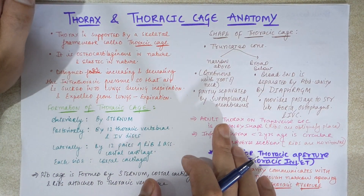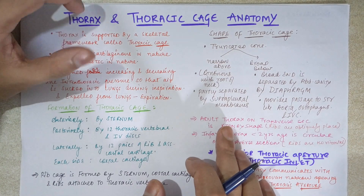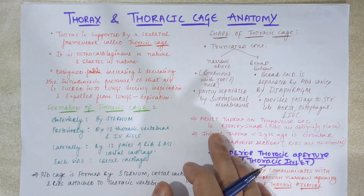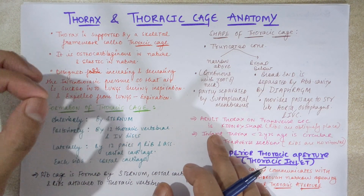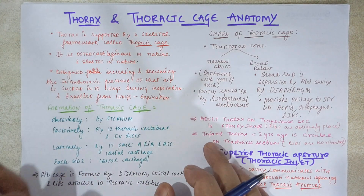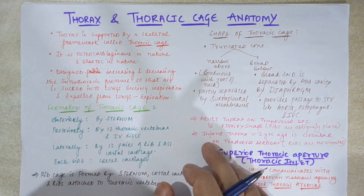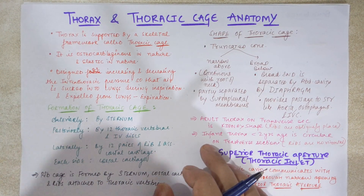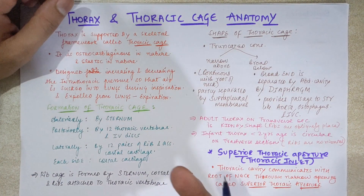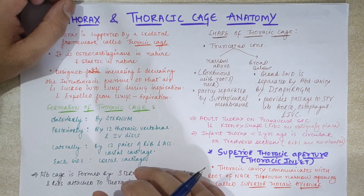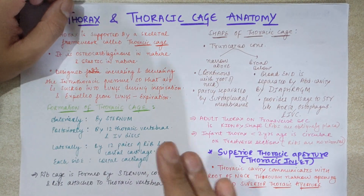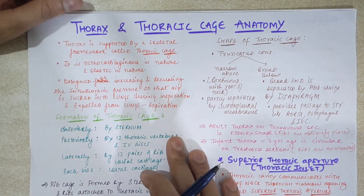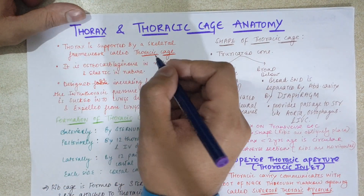Hello everyone, this is Suyash here. Today's video will be discussing another topic: thorax and thoracic cage anatomy. We'll be seeing the thoracic cavity in detail. This video will be in two parts. In the first part, we will talk about basic thoracic cavity boundaries, structures, and shape in adults and infants, relations, and the superior thoracic aperture.